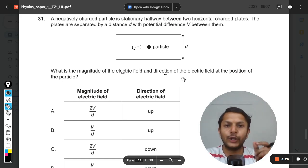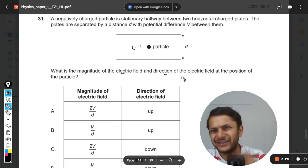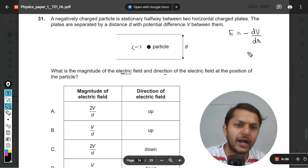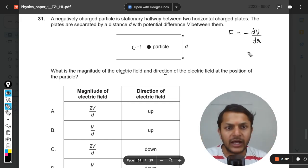My dear students, first of all, even in the earlier videos, I have given this formula many times, like E is equal to negative dV divided by dr. This is the formula which is to be used in highly detailed kinds of questions.